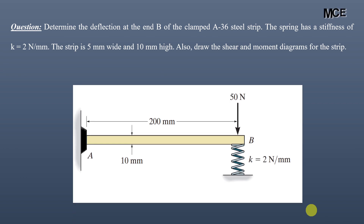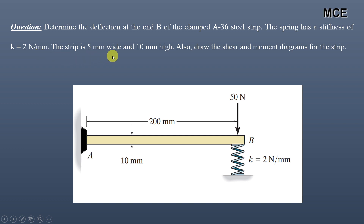Hello and welcome back to Master Civil Engineering. In this video you will learn how to analyze a statically indeterminate structure using the force method of structural analysis. The question asks us to determine the deflection at end B of a clamped A36 steel strip as shown in the figure. We also have to draw the shear and moment diagram for this strip.